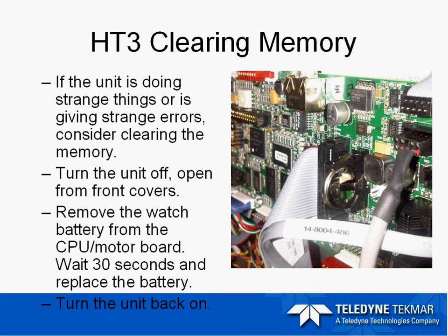Clearing the memory on the HT3 is pretty easy. Open the front door of the HT3 — the large board in the center is the CPU motor board, and this is where the battery is stored. If the instrument is doing something strange or giving strange errors, turn off the unit, open the panel, and locate the coin-size battery on the CPU board. Remove the battery or put something between the battery and the clip to break the connection, and then turn the unit back on. The method parameters will be wiped out, but since the instrument is PC-controlled, all you need to do is re-download your method from the software. The battery is a 3-volt CR2032, a very common size sold at many drug stores, and it holds all your methods and configurations.